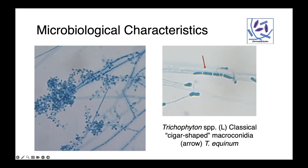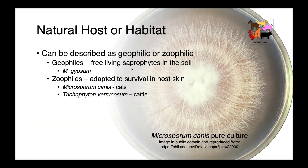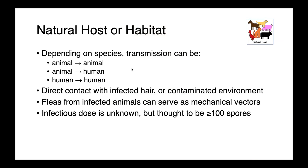Our dermatophytes can be described as geophilic or zoophilic. Geophilic organisms are free-living saprophytes that we find in the soil — a good example is Microsporum gypseum. Zoophiles are adapted to surviving on host skin and really prefer to be host-associated. Microsporum canis, deceptively, is most commonly found in cats, while Trichophyton verrucosum is one we associate with cattle. Depending on the species, transmission can be animal to animal, animal to human, or between people.